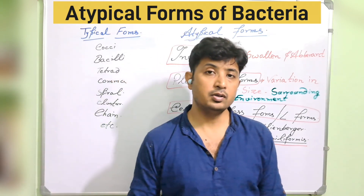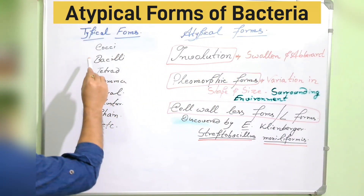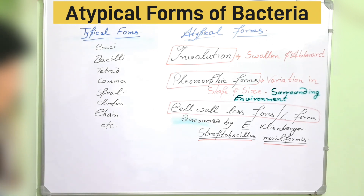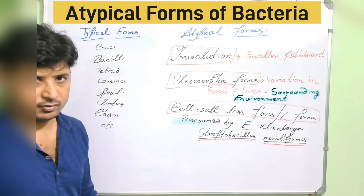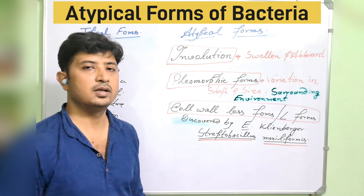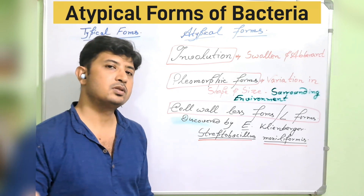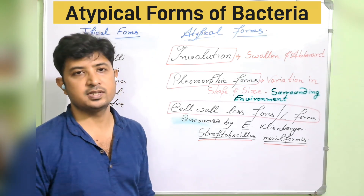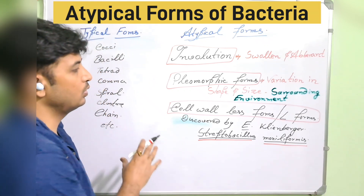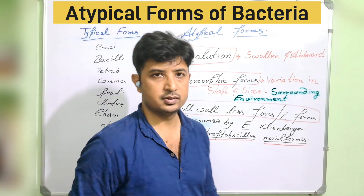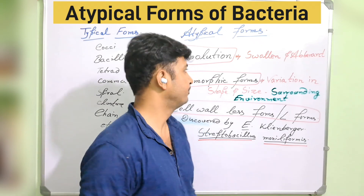For a quick review of typical forms: cocci, bacilli, tetrad, comma, vibrio, spiral, cluster, chain, and others like cuneiform and quadrate forms — these are species or genus level specifications. Today we will not be talking about these typical forms; we will be understanding the atypical forms. If you need an extra class on typical forms, let me know in the comment section.